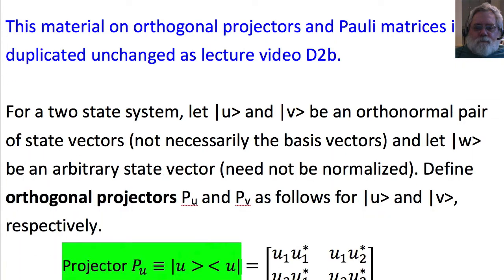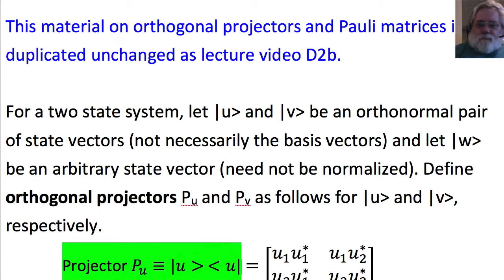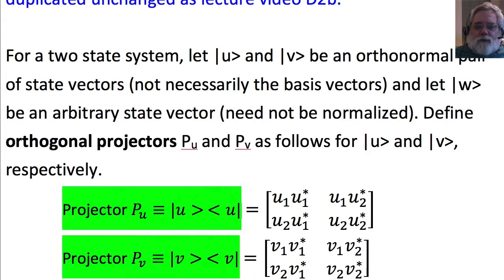For a two-state system, let ket u and ket v be an orthonormal pair of state vectors — not generally the basis vectors, just state vectors — and let w be an arbitrary state vector, not necessarily normalized. We're going to define orthogonal projectors p sub u and p sub v as follows for the state vectors ket u and ket v.